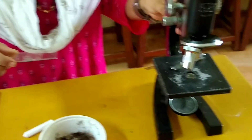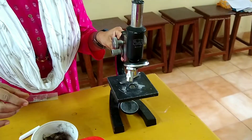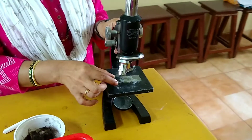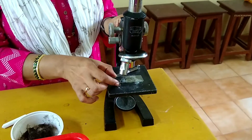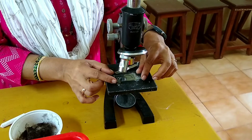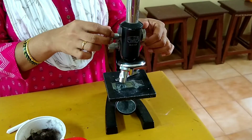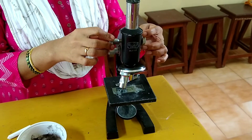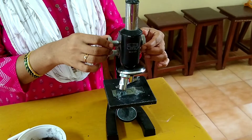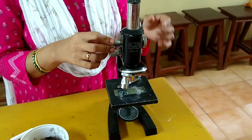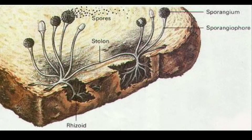We are using a compound microscope to observe the slide. After adjusting the compound microscope, you will get a clear picture of bread mold or Mucor. Let us see what we observe.